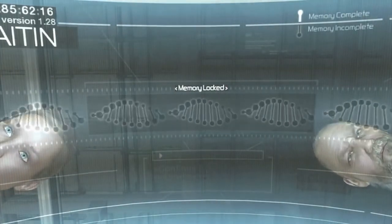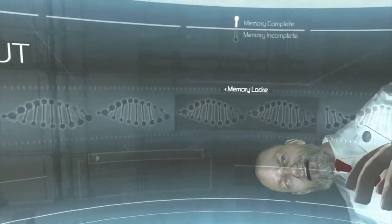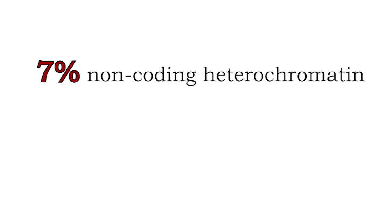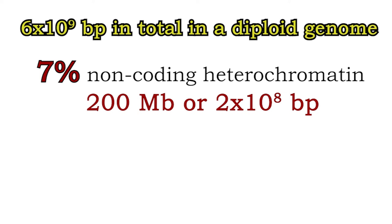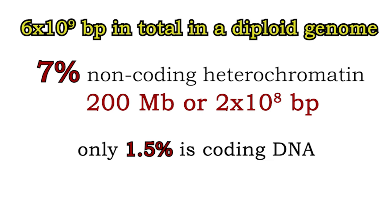Back to Assassin's Creed — this is where it gets interesting. Nowhere in any Abstergo files is it mentioned that genetic memories require actual genes. We only know it's part of the DNA. Heterochromatin non-coding DNA only comprises 7% of the actual genome, so around 200 megabases or 2×10⁸ base pairs. There are about 6×10⁹ base pairs per diploid genome, of which about 1.5% is actual coding DNA and the rest is non-coding DNA. This means that a high percentage doesn't contain genes — or scientists haven't defined them yet — so this could well be where genetic memories are stored.